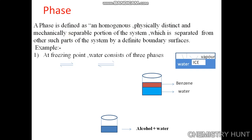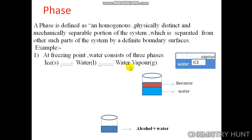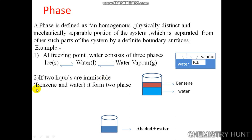Here we can see the examples. At the freezing point, water consists of three phases: ice, water and water vapor. See here — this is a closed vessel in which we can see the vapor, the ice and the water. We can see these three phases together in equilibrium. The second example: if two liquids are immiscible — they are not miscible, not homogeneous — for example, benzene and water, they form two phases.